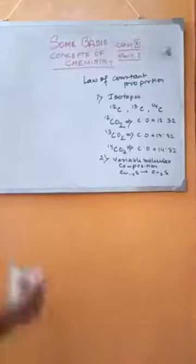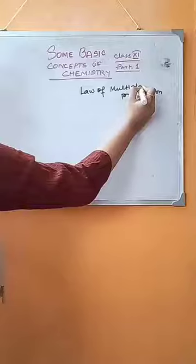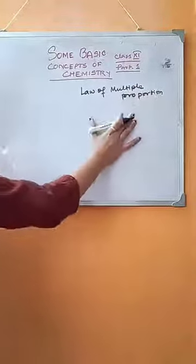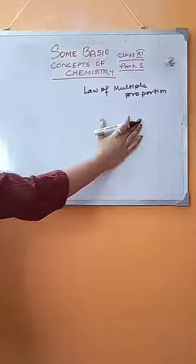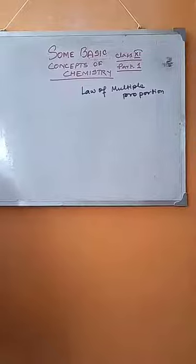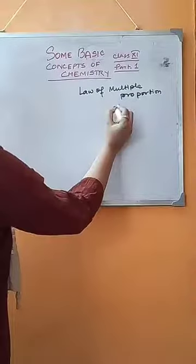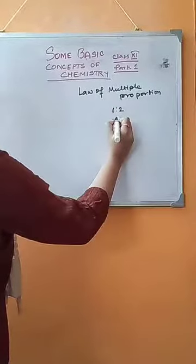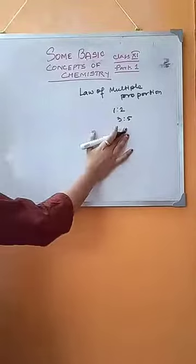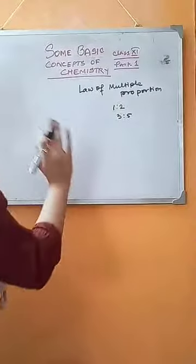The next is the law of multiple proportion. When two elements combine with each other to form two or more compounds, the different masses of one of the elements which combine with a fixed mass of the other bear a simple whole number ratio. A simple whole number ratio means ratios like 1:2 or 3:5 — there are no fractions or decimals in the ratio.